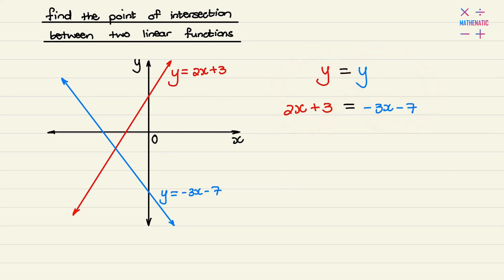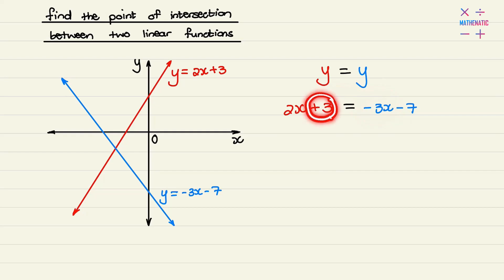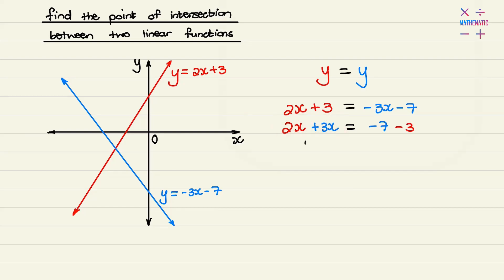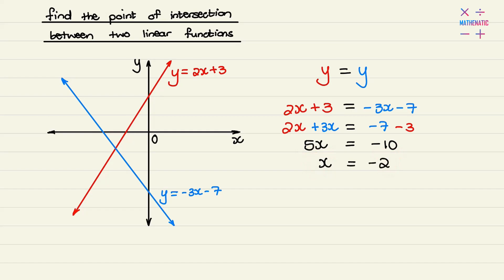Now I have a normal solve-for-x question. What I can do is transpose the 3x to the left and the positive 3 to the right. If I add up like terms on the left, I have 5x equal to negative 10, and in order to find x I divide both sides by 5, so negative 10 divided by 5 is negative 2.